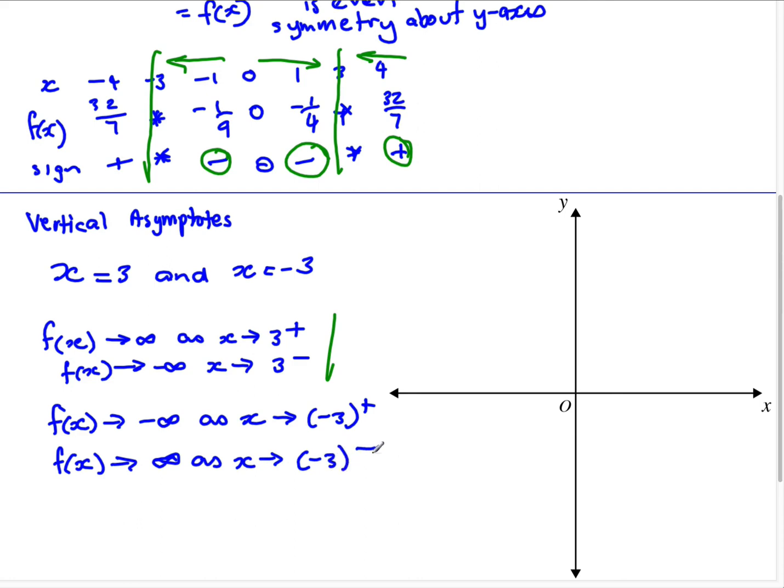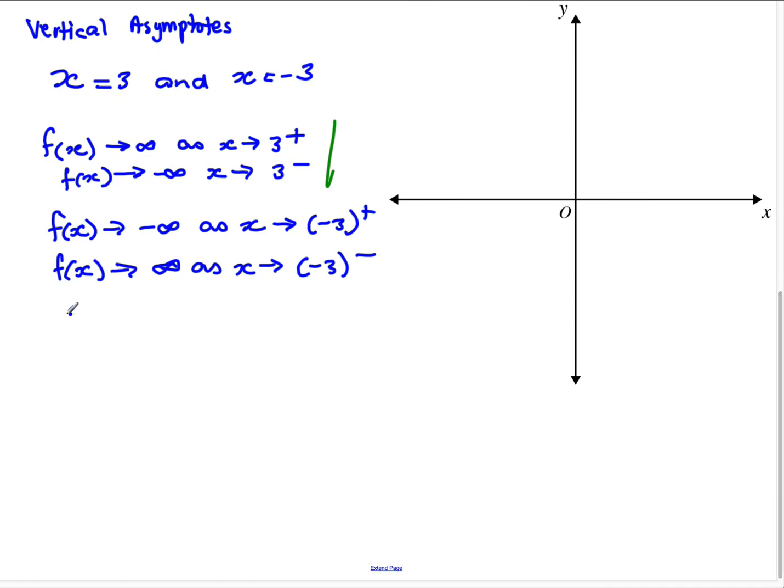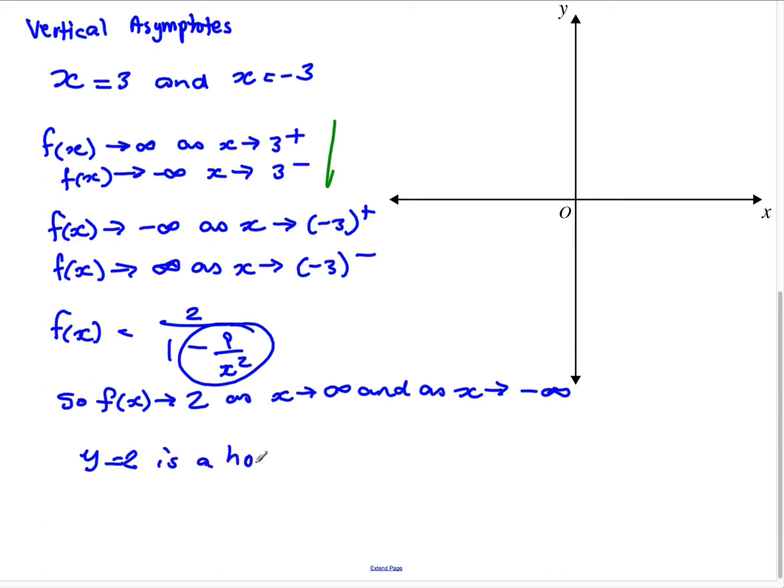So horizontal asymptotes. Well, we can divide throughout by x squared, the process that we saw a minute ago. So that will give us f(x) equals 2 over 1 minus 9 on x squared. And so f(x) approaches 2 as x approaches infinity and as x approaches negative infinity, because this term here approaches 0. So y equals 2 is a horizontal asymptote.